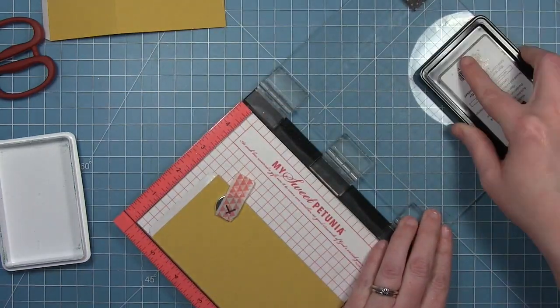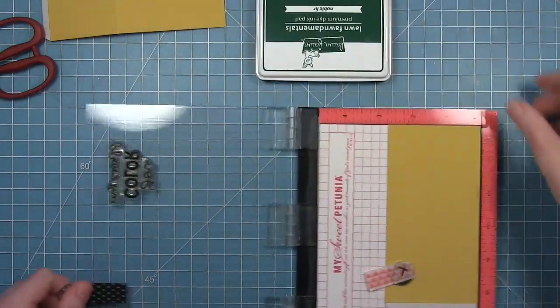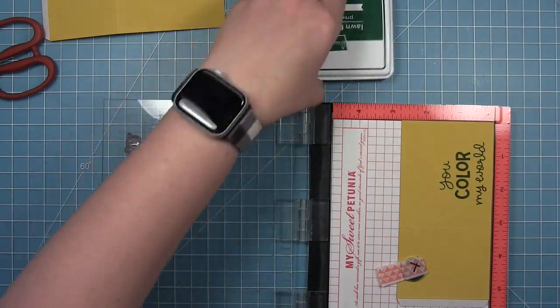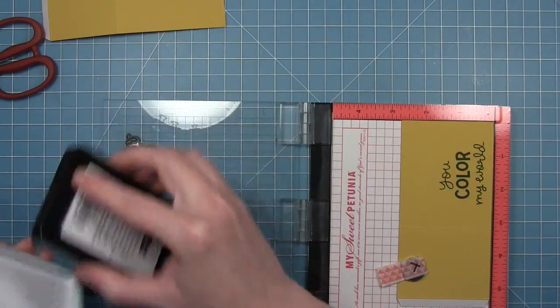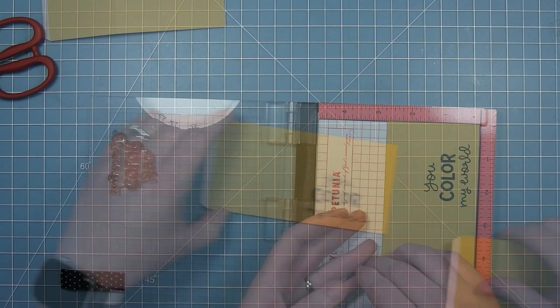I'm stamping this first before I die cut it so that I can line up my die cut correctly and make sure I have enough room for this sentiment to fit. So I've got it loaded in my MISTI here, and I'm stamping that with some Noble Fur ink. So this is a dark green ink.